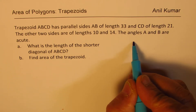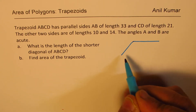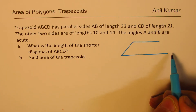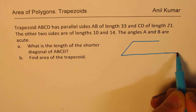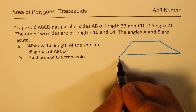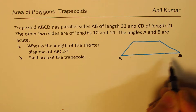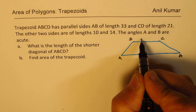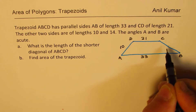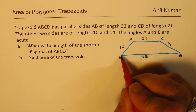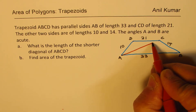Let me sketch one. These two sides are not equal — one of them is longer than the other, so we'll extend it to make it obviously longer. AB is 33, CD is 21, and the two sides are 10 and 14. The shorter diagonal will definitely be AC — that is the shorter one.